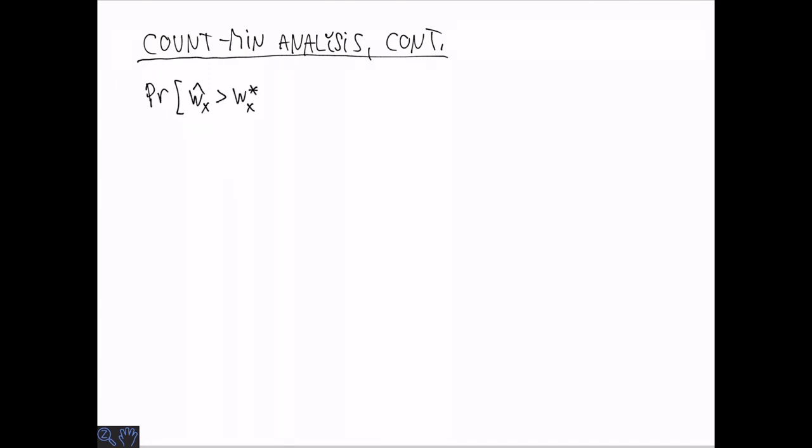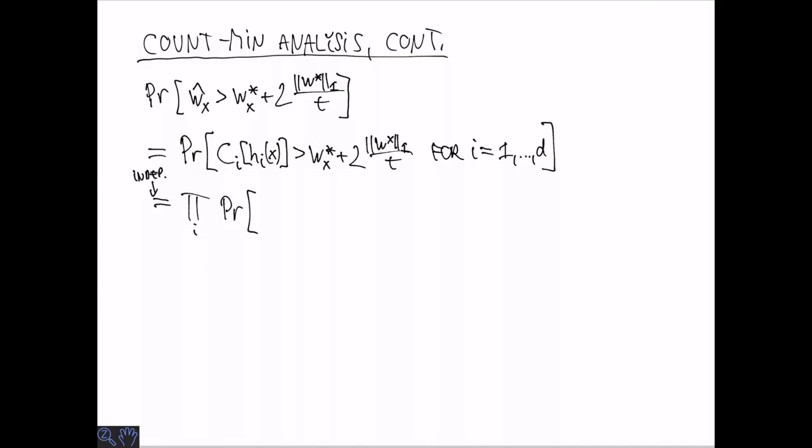But the repetitions allow us to give a better probability bound. So what we really want to estimate or bound is the probability that the estimator differs from the true count by twice the expected deviation for each of them. So this happens since we take the minimum if and only if we have such a large deviation for all i from 1 to d. Now these are independent because we have independent hash functions. So this probability is simply the product of all the probabilities that we have a large deviation in each. And we just argued from Markov that each of these probabilities is at most one half. So we have one half to the power d or two to the minus d. Now if you want a particular error probability delta we simply choose d to be the base two logarithm of one over delta. And then we succeed with probability one minus delta.